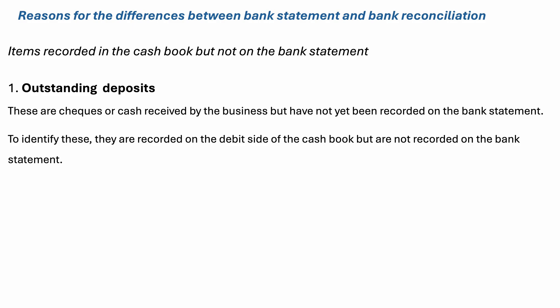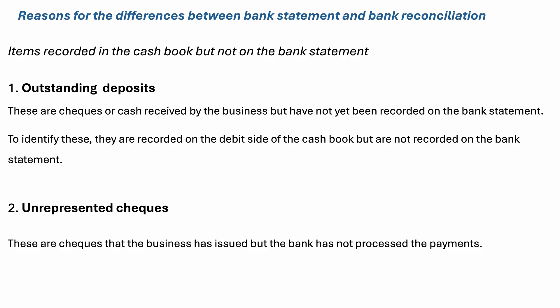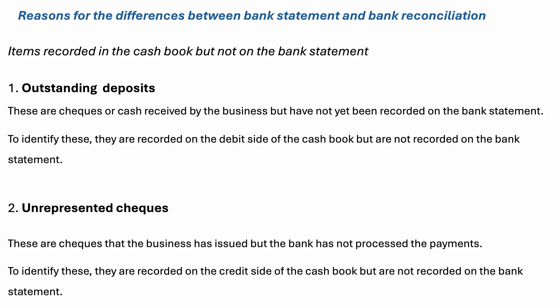Number two is unpresented checks. These are checks that the business has issued but the bank has not yet processed the payments. To identify these, they are recorded on the credit side of the cash book but are not recorded on the bank statement.